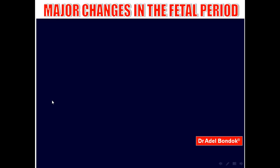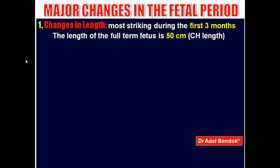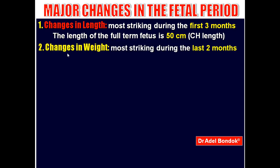The major changes in the fetal period are: maturation of the organs, elongation of the fetus in length — most striking during the first 3 months of the fetal period, with the full-term fetus reaching 50 cm — and increase in weight, most striking during the last 2 months, with the full-term fetus weighing 3.2 kg.